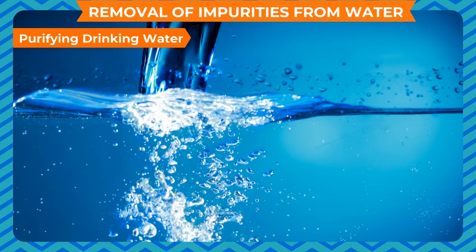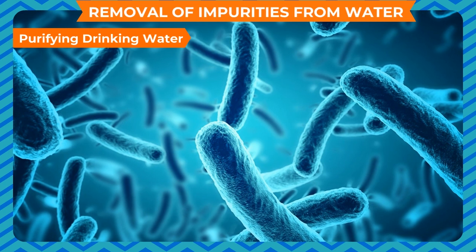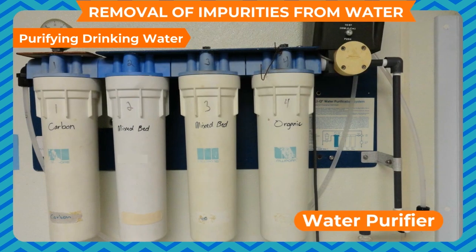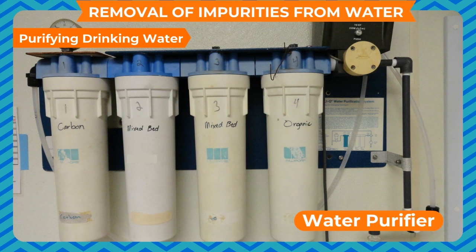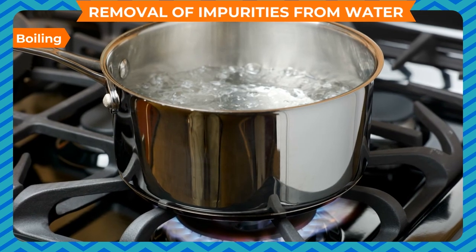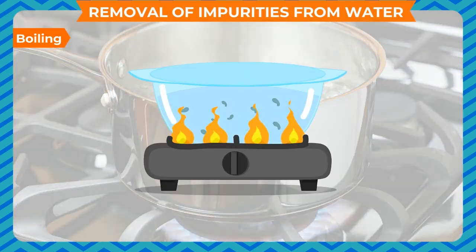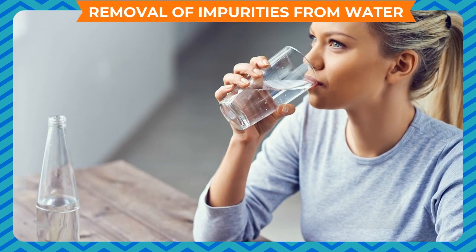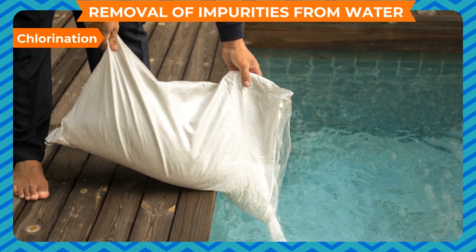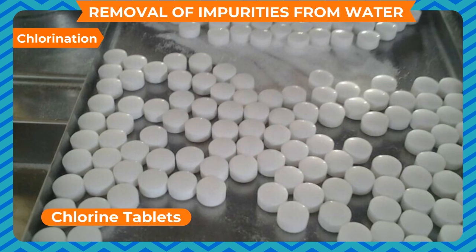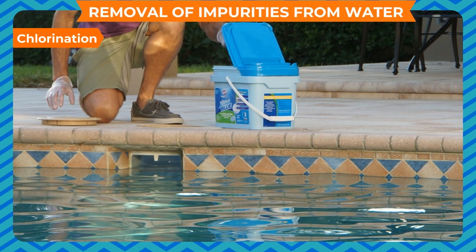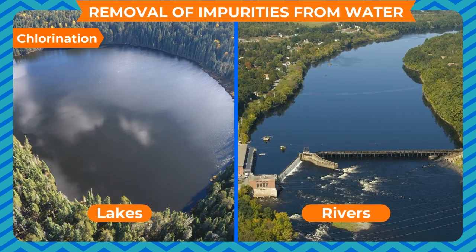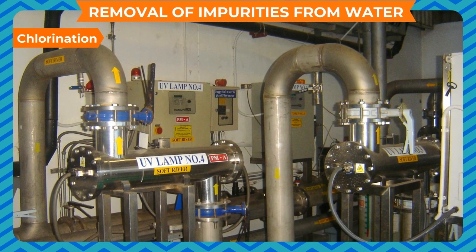Purifying drinking water: water may contain germs and some soluble impurities that can cause diseases, so water must be purified to make it fit for consumption. Boiling is the simplest method — boiling water for about 10 to 15 minutes kills the germs and makes it fit for drinking. Chlorination is another method — adding chlorine tablets to water kills germs and makes it fit for drinking. Water obtained from lakes and rivers is also purified in large purification plants before it is made available to homes.